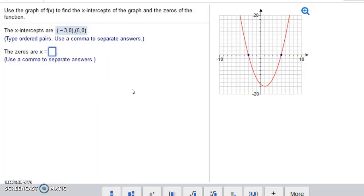Now what are the zeros of the function? Well, the zeros of the function are just the values of x that give you zeros in output. So essentially they're the same as the x-intercepts, only these are just numbers. So we just have negative 3 and 5. So it says to put a comma to separate our answers. So x equals negative 3 and x equals 5. Those are the zeros of this function.